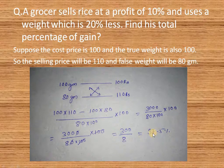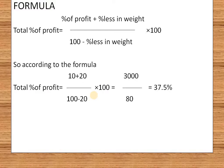There is also a formula for this type of question: total percentage of profit equals percentage of profit plus percentage less in weight, divided by 100 minus percent less in weight, into 100. Here, percentage of profit is 10 and percent less in weight is 20, divided by 100 minus 20, into 100. After calculating this, we get 300 divided by 8, which equals 37.5 percent.